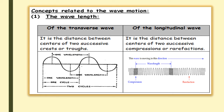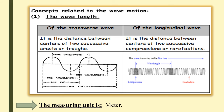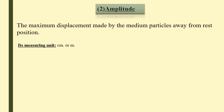In wave motion, we have several properties. Number one: wavelength. For a transverse wave, the wavelength is the distance between the centers of two successive crests, or between two successive troughs. For a longitudinal wave, the wavelength is the distance between two successive compressions or two successive rarefactions.